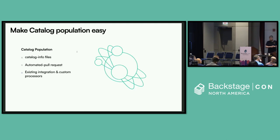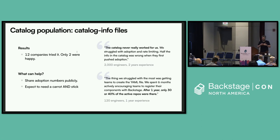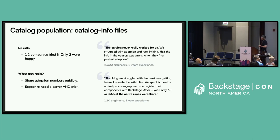The second big thing is making catalog population easy. Catalog is important because you can't get full value from Backstage unless your catalog is correct, rich, and complete. If you want to measure software maturity, for example, you can't measure the maturity of something that's not in Backstage. It's also really difficult, it turns out. Of 12 companies who tried to create a rich and complete catalog with catalog-info YAML files, only two seemed to be successful, and other people seemed to reach about 25% catalog completeness after a significant amount of effort.